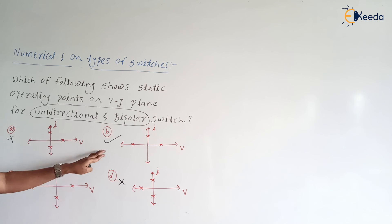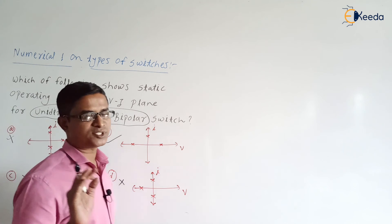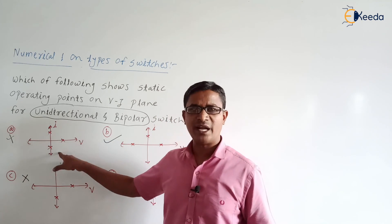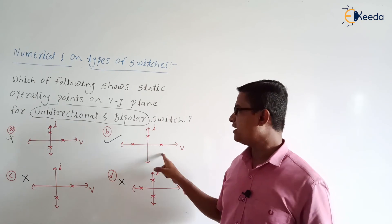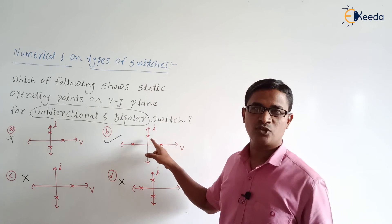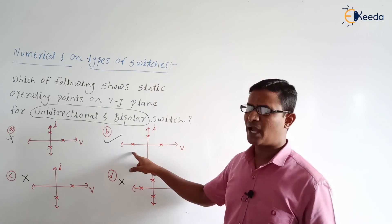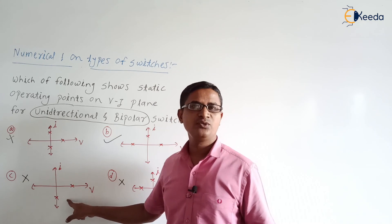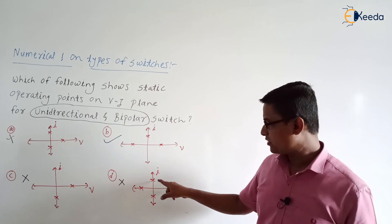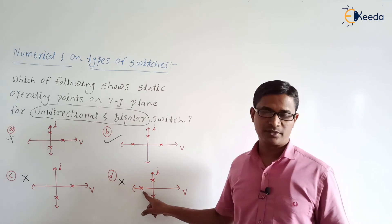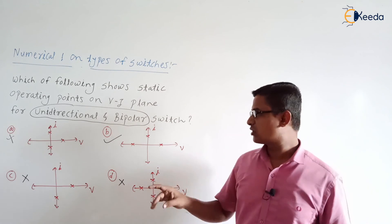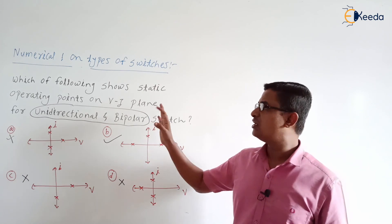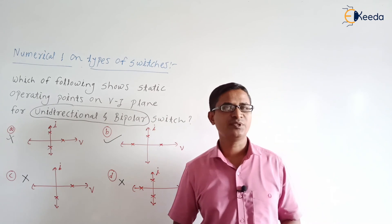So the correct answer is option B. To summarize: option A is unipolar bidirectional, option B is bipolar and unidirectional, option C is unipolar and unidirectional, and option D is unipolar and bidirectional. The correct option is option B. This concludes the numerical on types of switches.